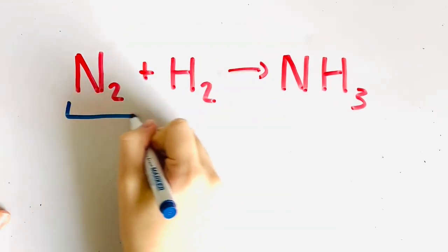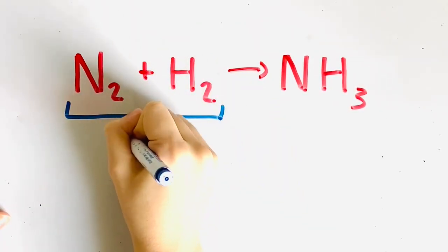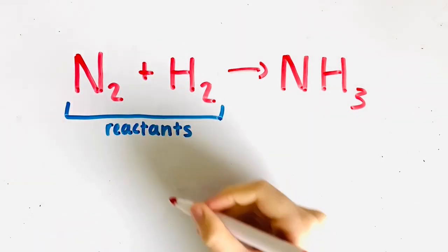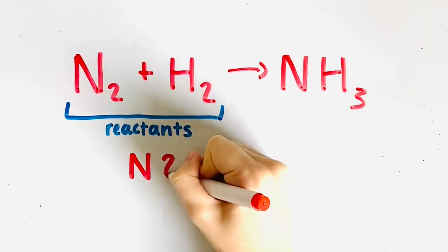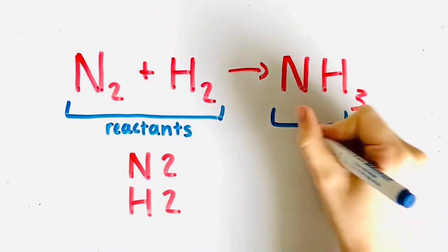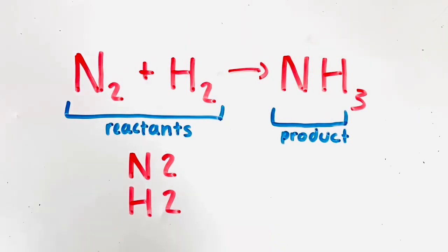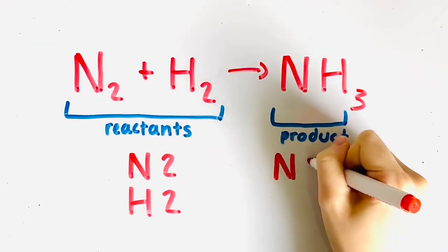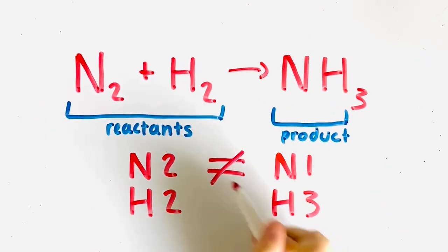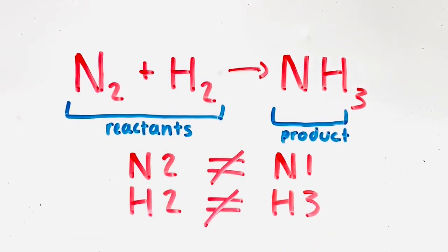For example, the equation N2 + H2 yields NH3 is not balanced. On the reactant side, there are two nitrogen atoms because N has a subscript of 2, and there are two hydrogen atoms because H also has a subscript of 2. On the product side, you have one nitrogen atom because N has no subscript, and three hydrogen atoms because H has a subscript of 3. As you can see, two nitrogen atoms is not equal to one nitrogen atom, and two hydrogen atoms is not equal to three hydrogen atoms, so the equation is not balanced.